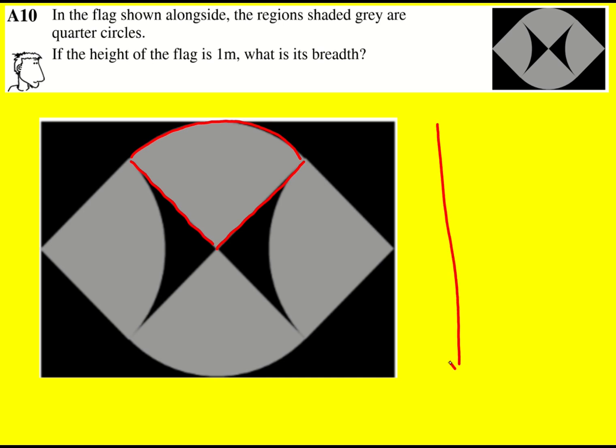Because we're told that the height of the flag is one meter, and that means because I've got these two quarter circles down here that are exactly the same, it must be that this length here, the radius of the quarter circle, is going to be a half.